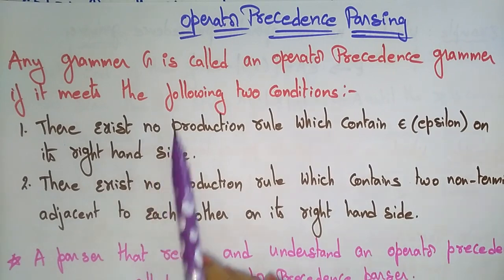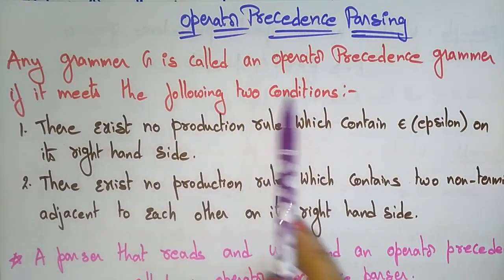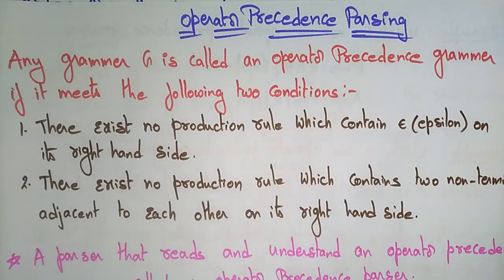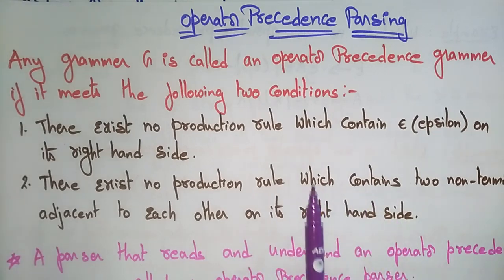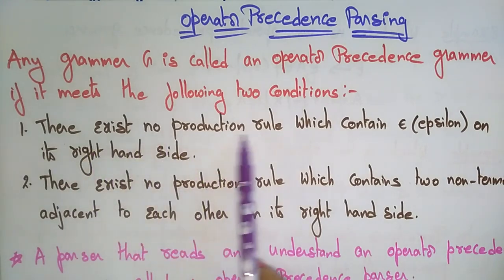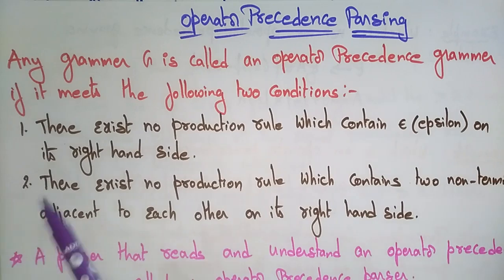Any grammar G is called an operator precedence grammar if it meets the following two conditions. The first condition is: there exists no production rule which contains epsilon on the right hand side.